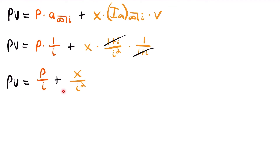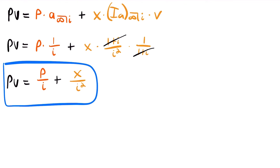This is the present value of a perpetuity with an increasing arithmetic progression, where p is your initial payment and x is the amount by which each payment increases every period. This is a very clean formula to remember. For example problems using both this formula and geometric perpetuities, check out the examples video linked at the end of this video and in the description below. If you have any questions, feel free to leave them in the comments — see you next time.